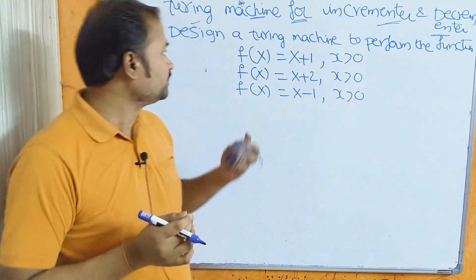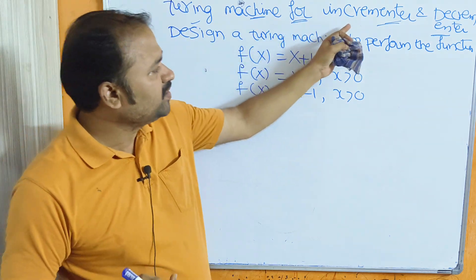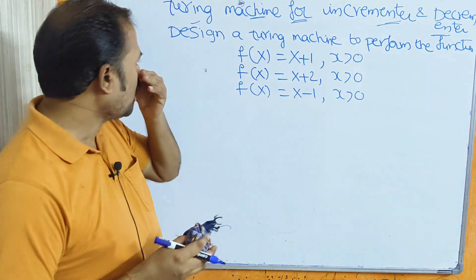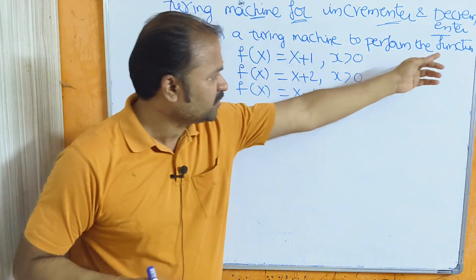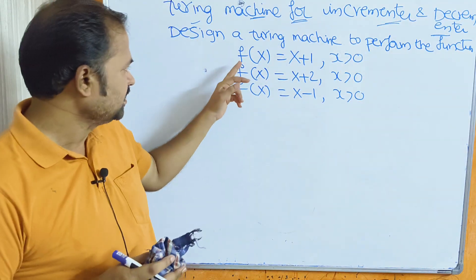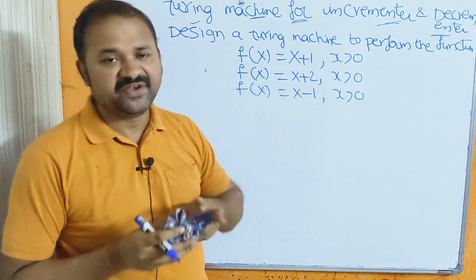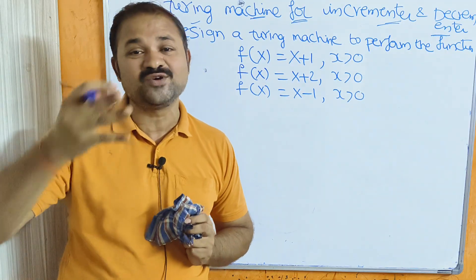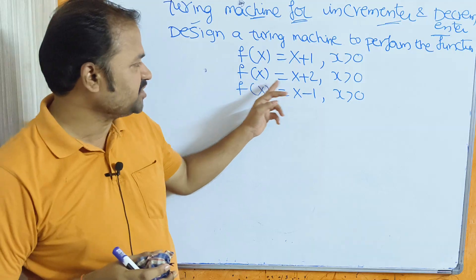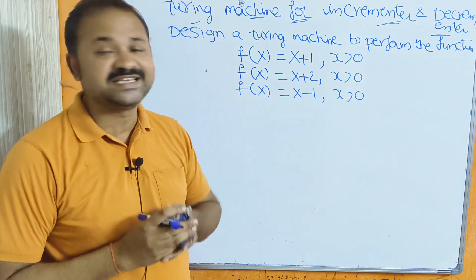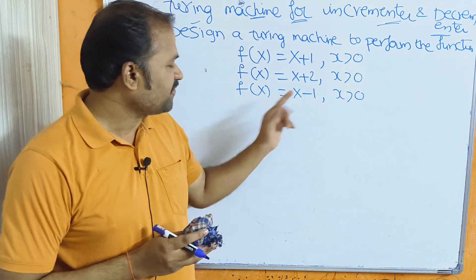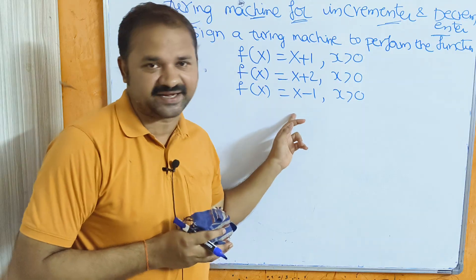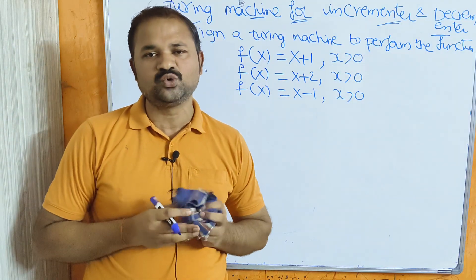Design a Turing machine for incrementer operation as well as decrementer operation — or design a Turing machine to perform the following functions: f(x) = x+1 where x > 0, which is the incrementer (it increments the value of the variable by 1); f(x) = x+2 where x > 0; and f(x) = x-1 where x > 0, which is the decrementer (it decrements the value of the variable by 1).